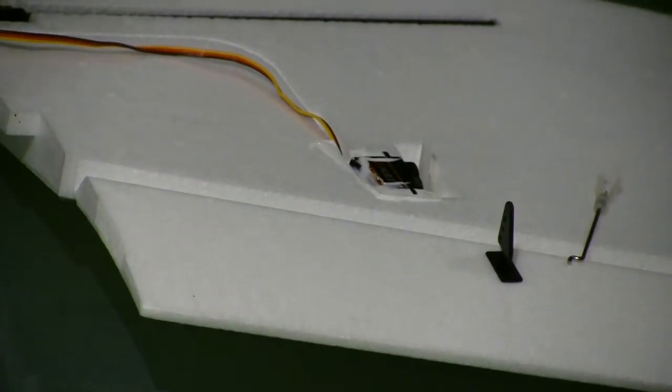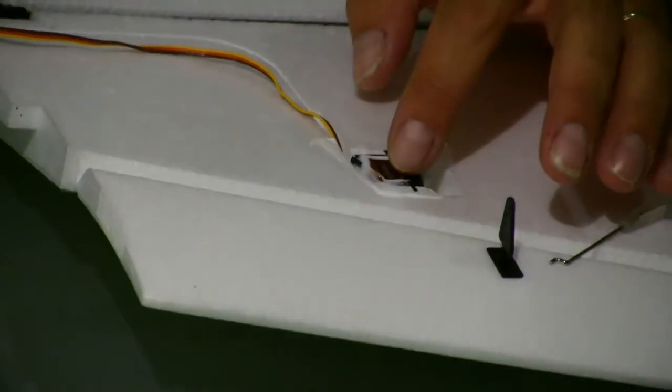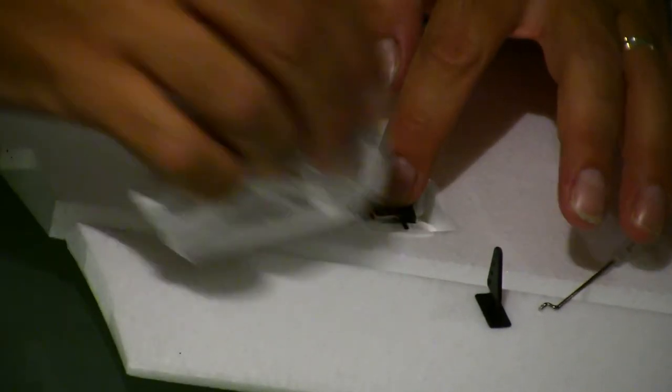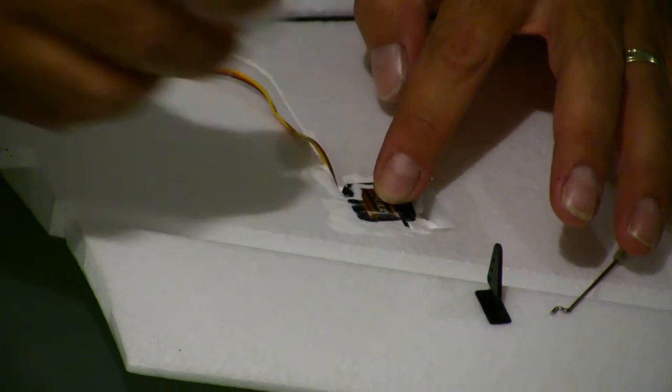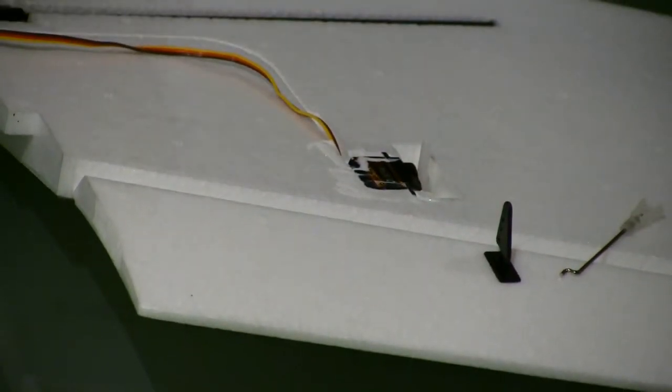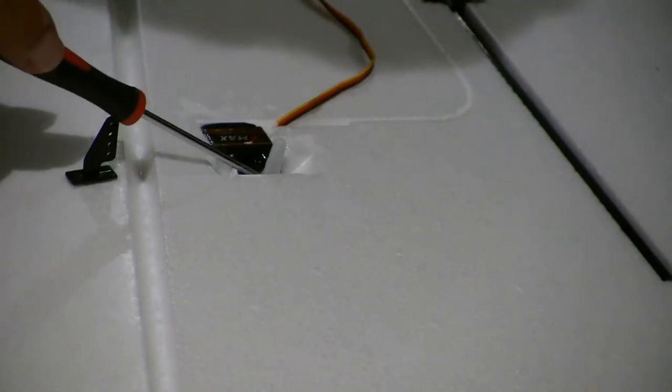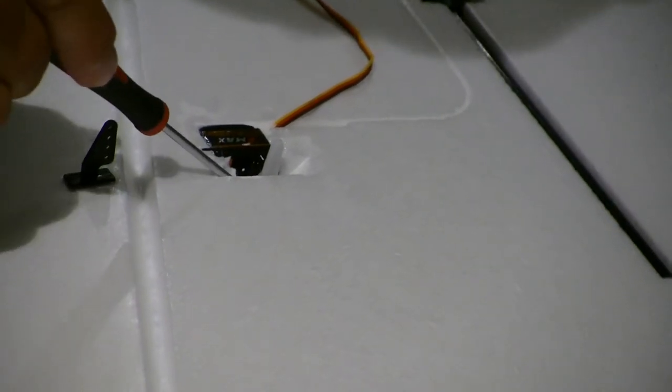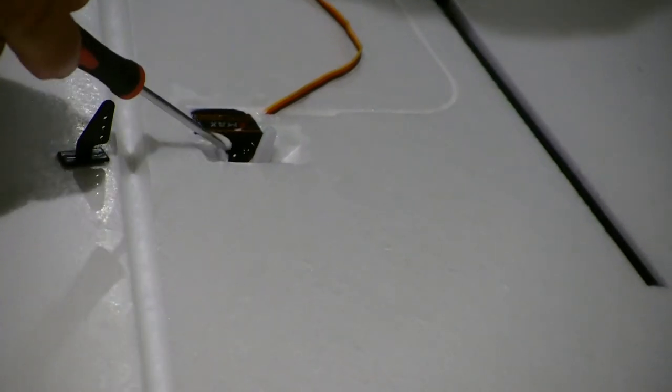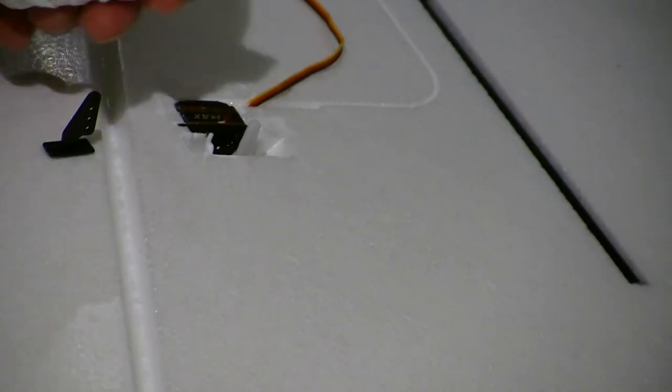I've put plenty of glue on the servo, I'll put that in now. Don't be shy with the glue, stick it in there. I'll just give it a quick wipe to clean any excess off and that won't be coming out. Control horn set straight up. I'll do the initial setup later but I'll let that dry now overnight.